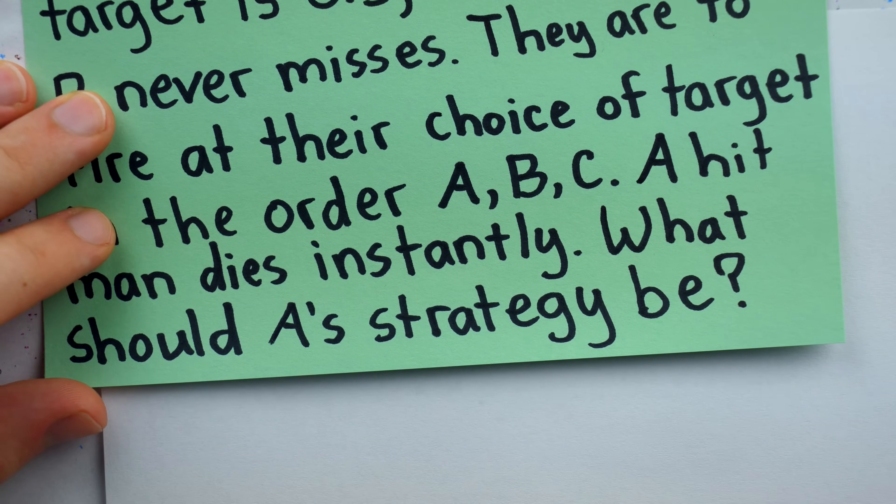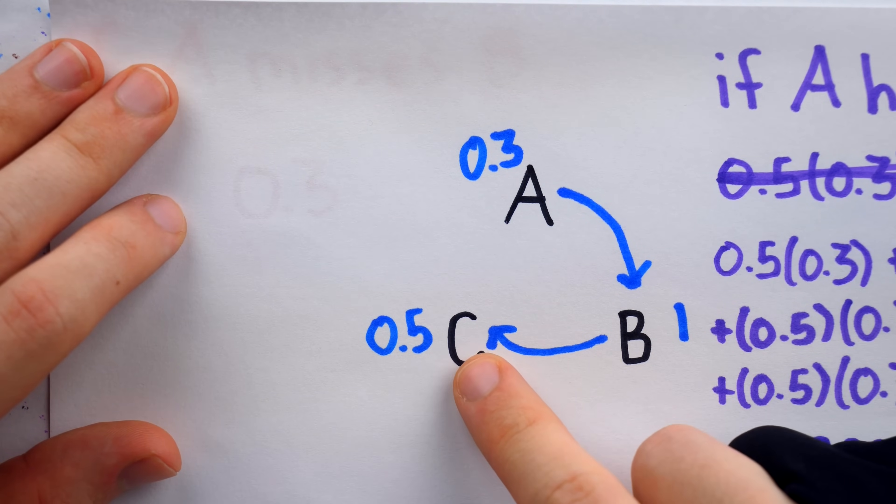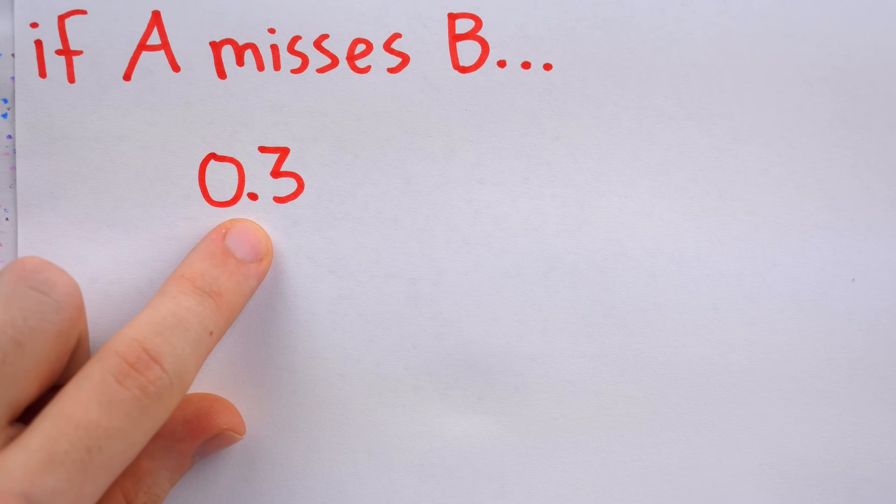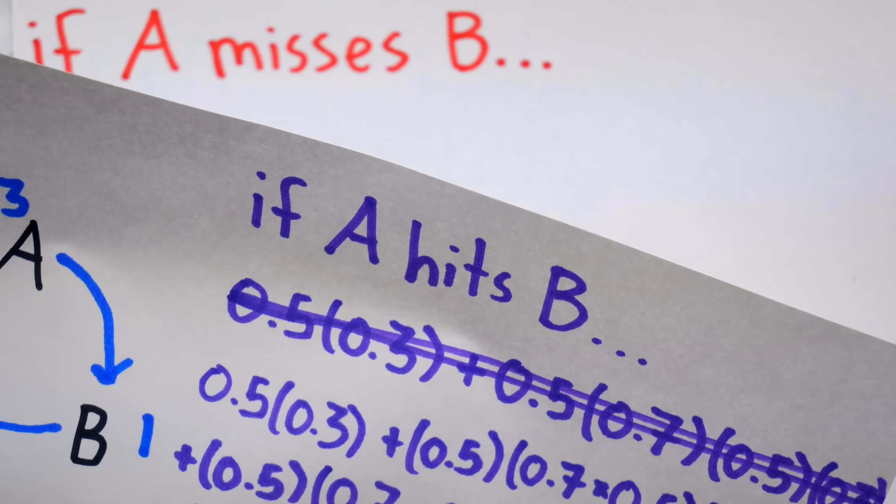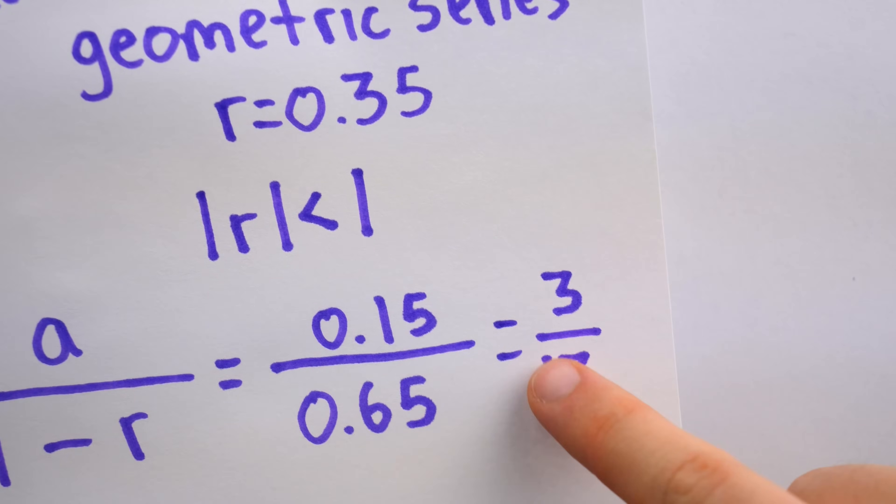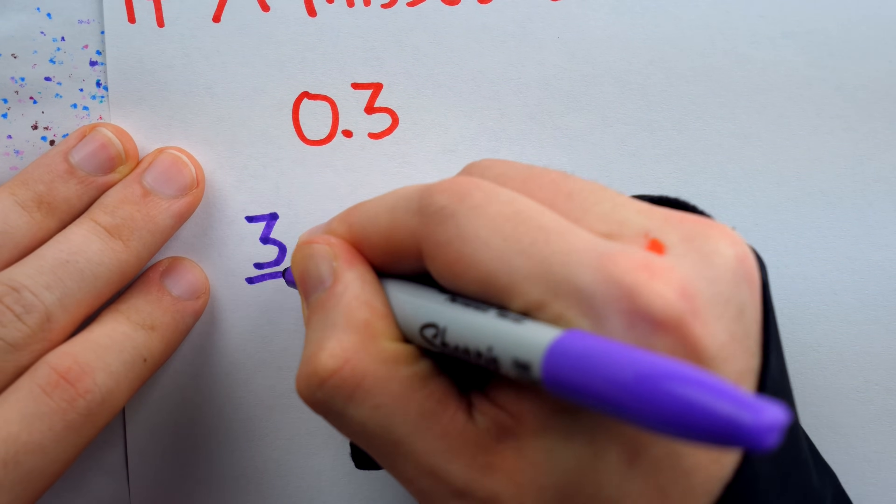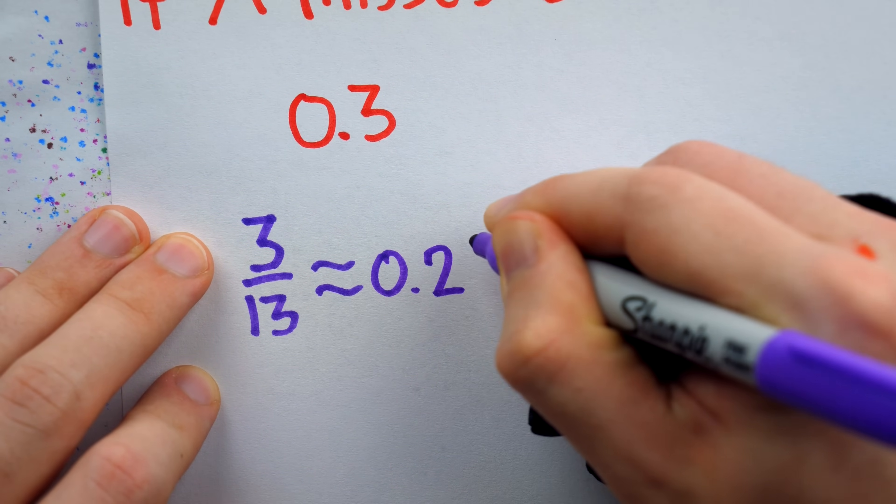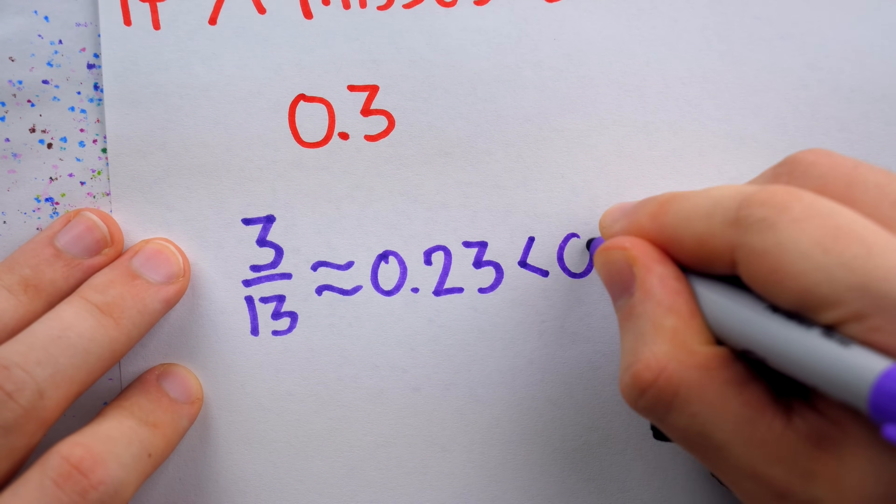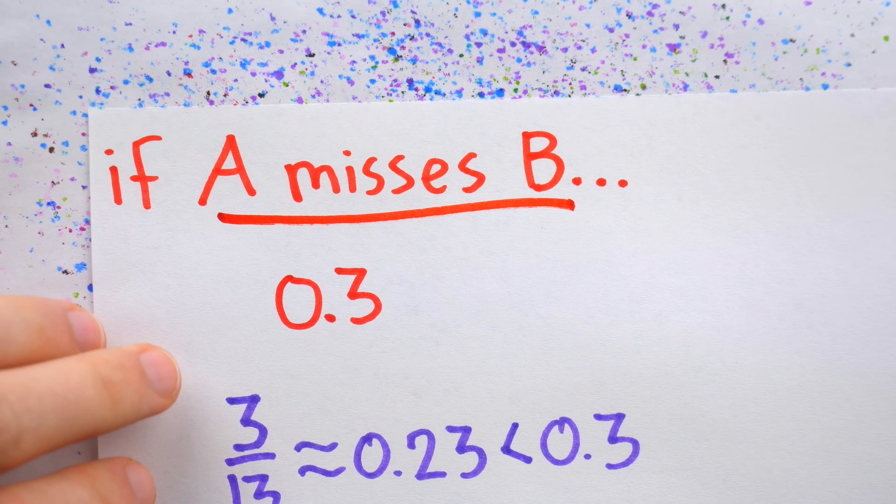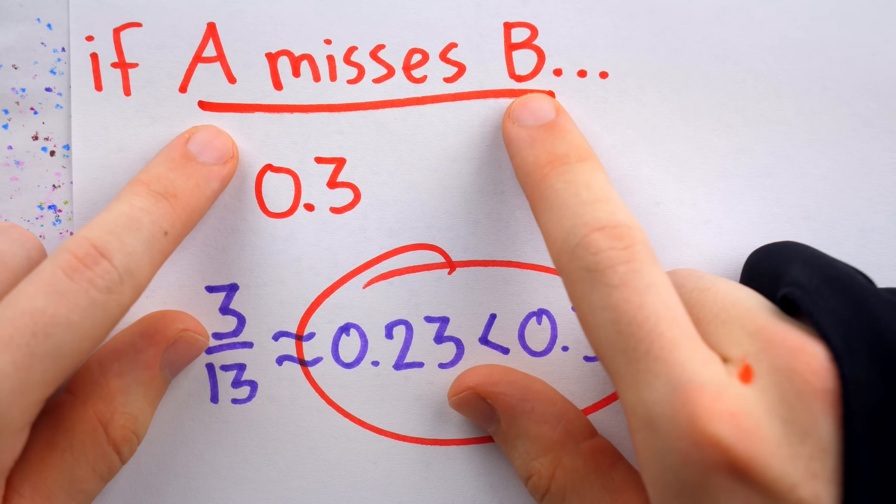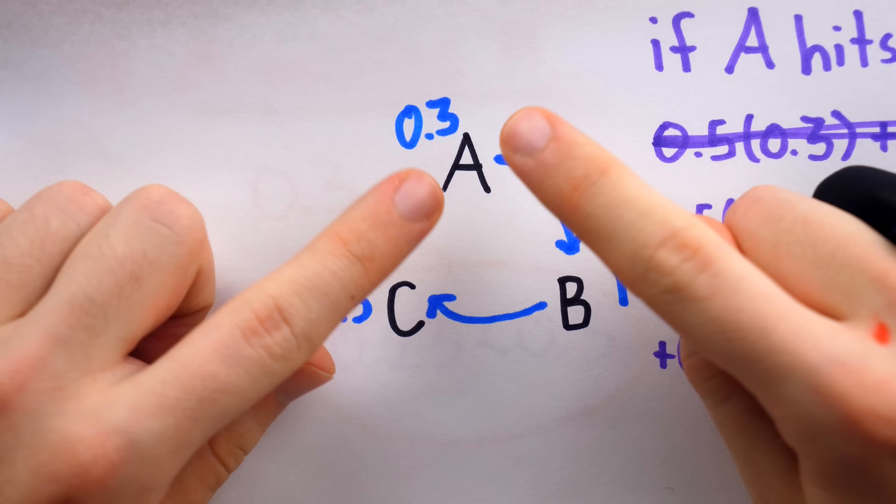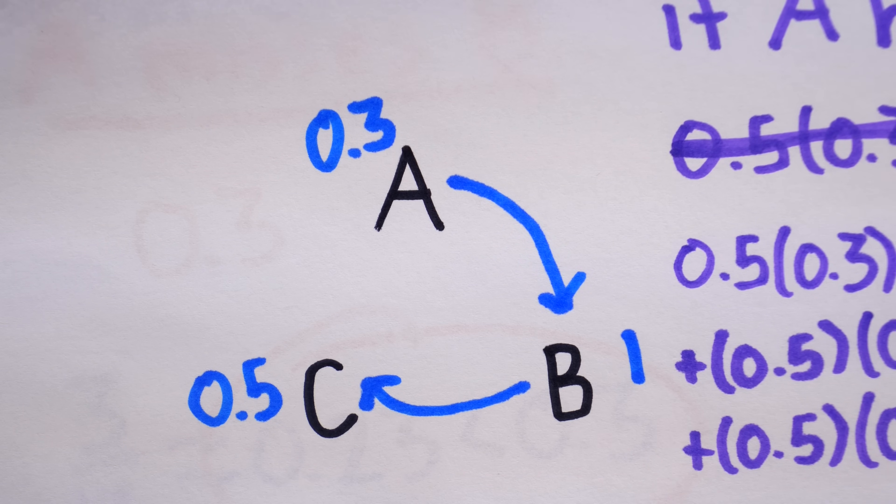So returning to the question, what should A's strategy be? Well, we already determined that A shouldn't shoot at C because A stands to gain nothing by doing that. And as for shooting at B, the two possibilities are A misses B, which leaves A with a 0.3 probability of survival, or A actually hits B, which after running the numbers, we see leaves A with a 3 over 13 probability of survival. Now, if you're quick with your number sense, you probably know how 3 over 13 and 0.3 compare. 3 over 13 is roughly 0.23. In other words, it's less than 0.3. So in fact, A missing his first shot is objectively the better strategy. So instead of leaving that miss up to chance, A should simply shoot at the ground and let B dispatch C. That then guarantees that A has the first shot at B.